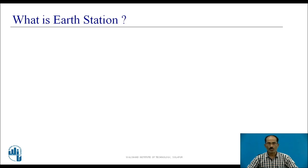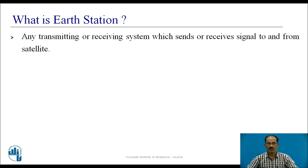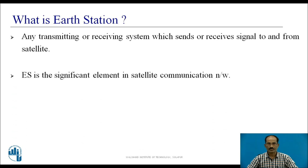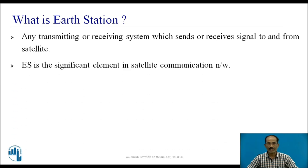In this topic, I am going to discuss a part of the Earth Segment which is called the Earth Station. An Earth Station is defined as any transmitting or receiving system which sends or receives signals to and from a satellite. Earth Station is a significant element in the satellite communication network and plays a very important role in satellite communication systems.